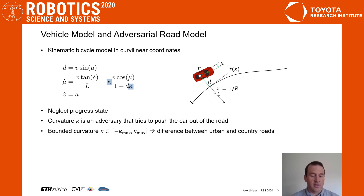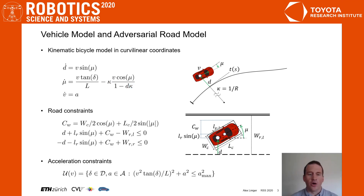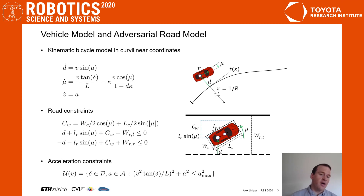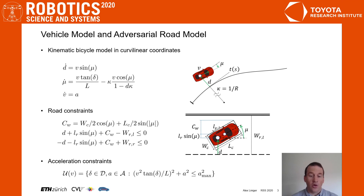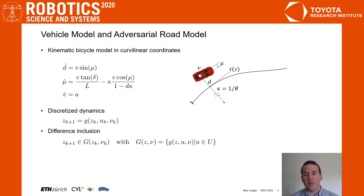We assume that the curvature is bounded by kappa_max and that the goal of this adversarial player is to push the car outside of the road. For this we need road constraints, and we propose to use road constraints which also consider the heading of the car. To make the fight fair we also limit the actions of our car. We impose box constraints on the steering angle and the acceleration input, and more importantly we also limit the combined acceleration to stay within a circle with radius a_max.